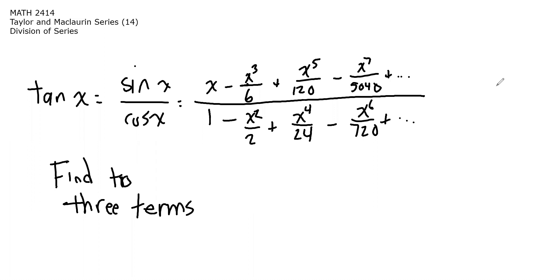Now, you may be wondering why I wrote the denominators as 6, 120, 5040, as opposed to their factorials, 3 factorial, 5 factorial, 7 factorial. And the same thing with the denominators in the series for cosine. That's because we're actually going to be doing arithmetic with those numbers, so we kind of need to know what they are. And we're going to find this series to three terms.